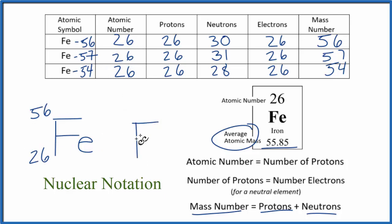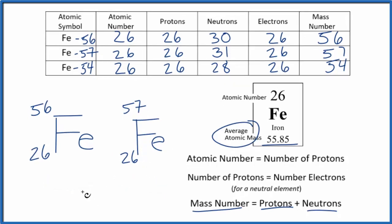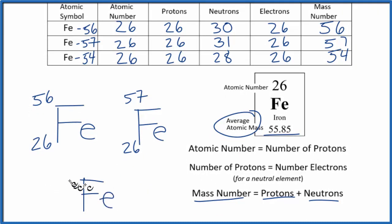We could do iron 57 as well. And again, it's 26 for the atomic number because that's the definition of iron. And then finally, iron 54, you can kind of guess, would look like this.